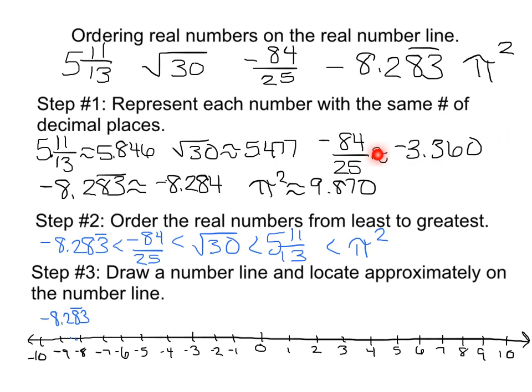And if I go up here to my decimal, it's a negative 3.360. So that's going to be to my left of my negative 3, right about there. So I'm going to label that negative 84 over 25.